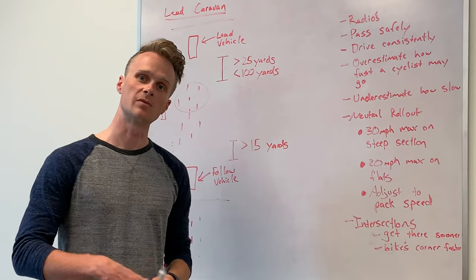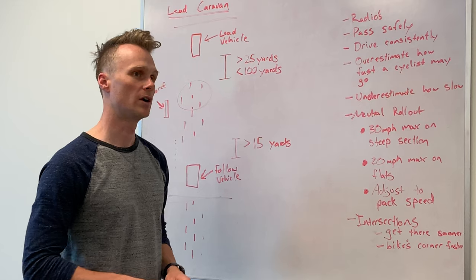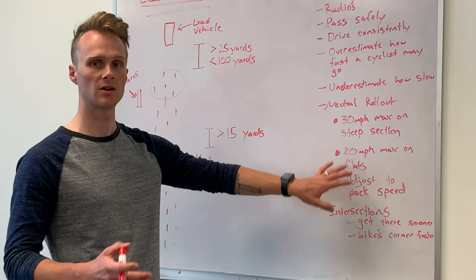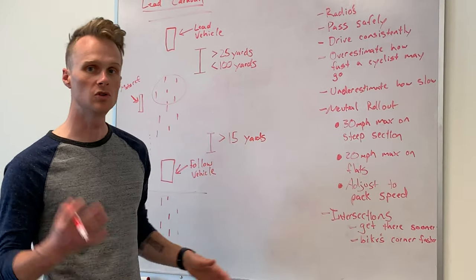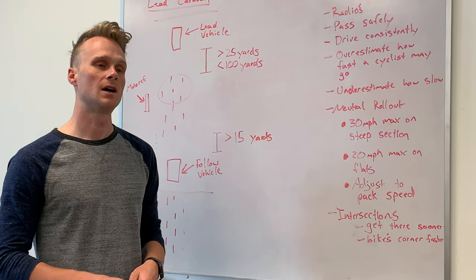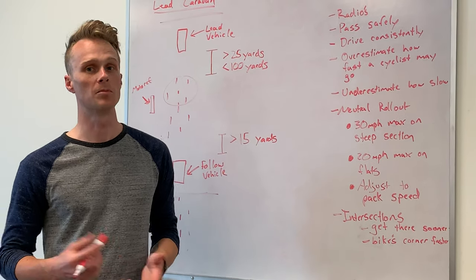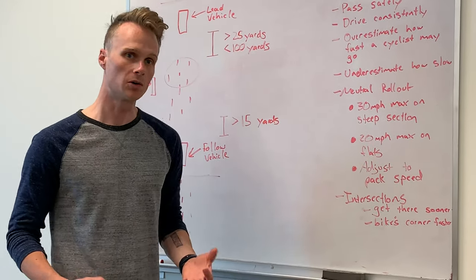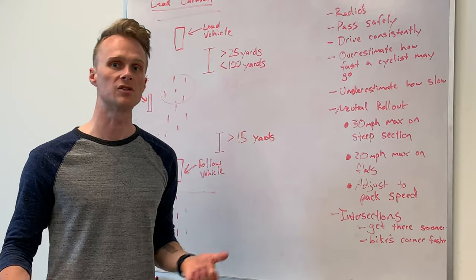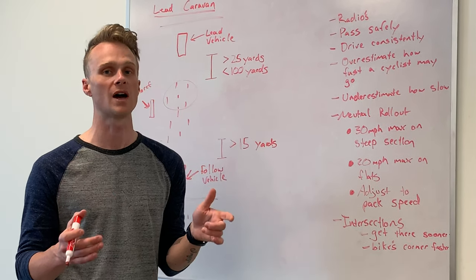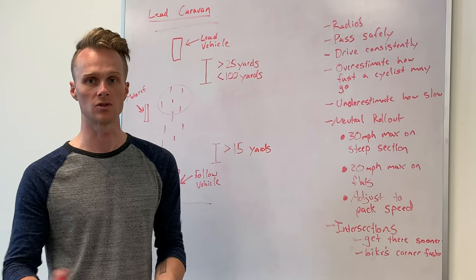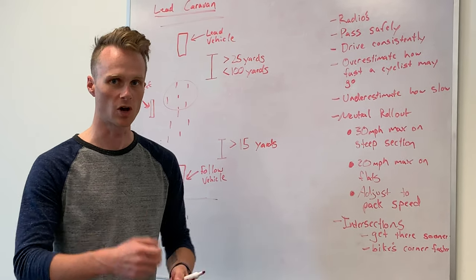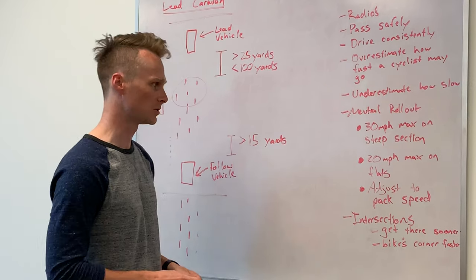And then on the flats, there's some flats on Glenmara where riders will be around 20 miles an hour. Try to stay around 20 miles an hour. If you go too fast, then it's going to promote racing and we don't want racing. This is neutral. If you go too slow on the steep sections, riders are going to be hanging out on their brakes the whole time. And that is also dangerous because then you get people's brakes burning up and people are kind of on edge. We want to get them off the mountain as quickly as possible.